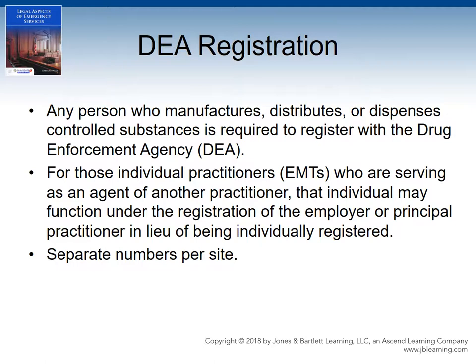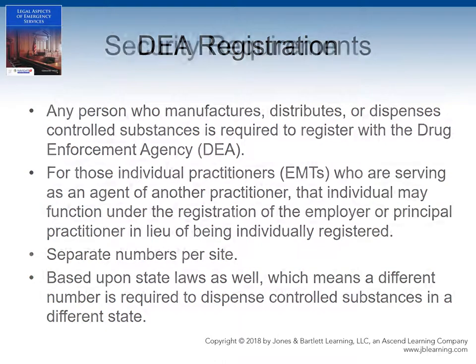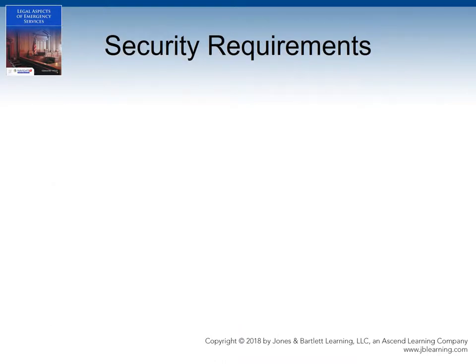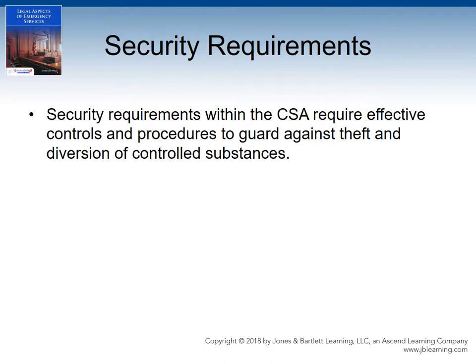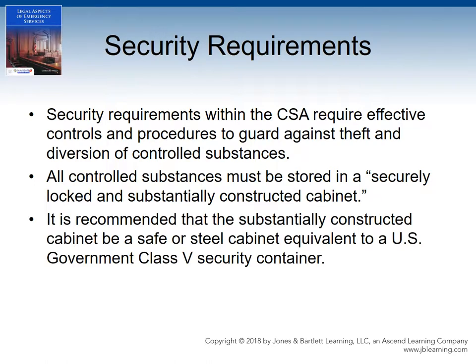As this provision is open to some interpretation, clear guidance is not available. If you are on an ambulance service that practices across state lines, a separate DEA registration number is required for each state in which the ambulance company practices. Security is also a major concern with regard to controlled substances. The Controlled Substances Act requires effective controls and procedures to be in place to guard against theft or diversion of controlled substances. Beyond the requirement that controlled substances be stored in a securely locked and substantially constructed cabinet — recommended to be a safe or steel cabinet equivalent to a U.S. government class 5 security container — keeping the morphine in a jump kit is probably not adequate security under the Controlled Substances Act.